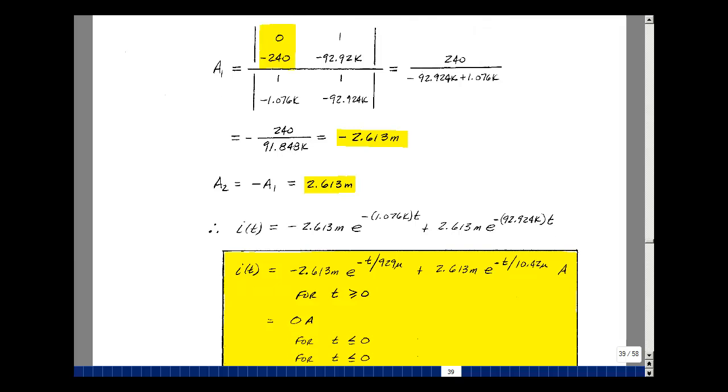Let's put this together now for our solution. We've got A1 times e to the minus S1t plus A2 e to the minus S2t. We can plug in the values of S1 and S2. If we write this as the reciprocal, 1 over 1.076 k, which is 929 microseconds, and the reciprocal of this is 10.42 microseconds, we can interpret this exponential. This term will die out in five time constants, about one millisecond, so in five milliseconds this term will be gone. This other term will be gone roughly 50 or 60 microseconds.